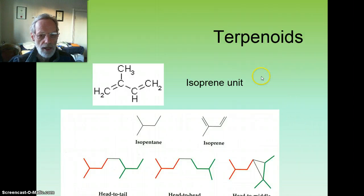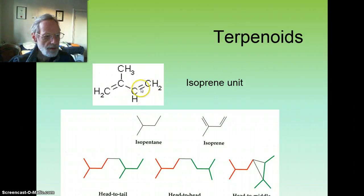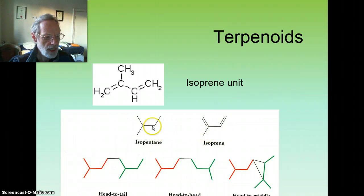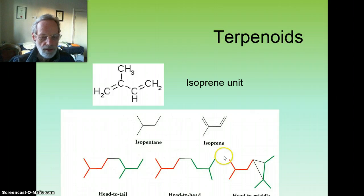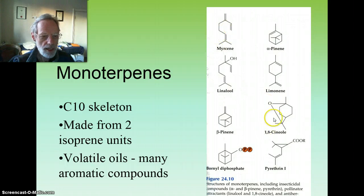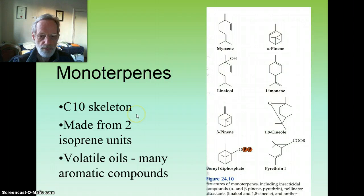Taking the terpenoids first. Terpenoids or terpenes are essentially hydrocarbons based on a five-carbon isoprene unit. You can see how it's related chemically to the hydrocarbon isopentane — it just has two double bonds instead of all the single bonds of isopentane. In the synthesis of terpenoids, isoprene units are joined in numerous ways to give rise to a large number of molecular shapes. You can see some of these shapes in the volatile compounds included within the monoterpenes, which are made from two isoprene units and are therefore 10-carbon compounds.